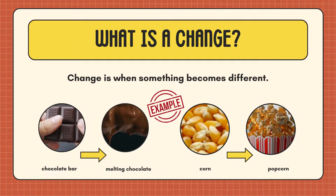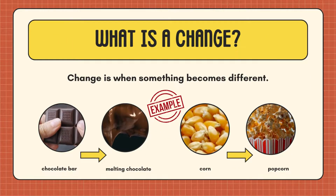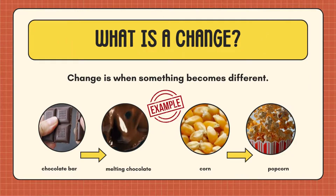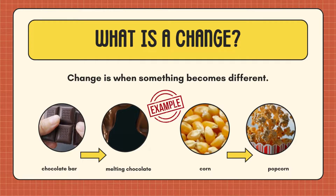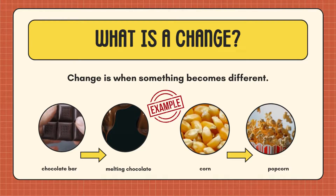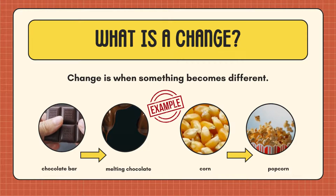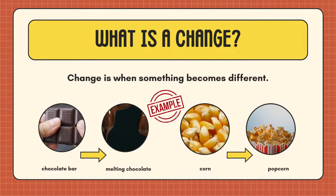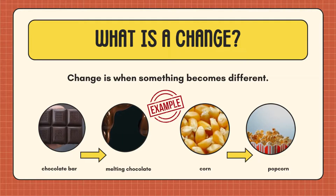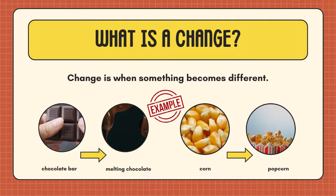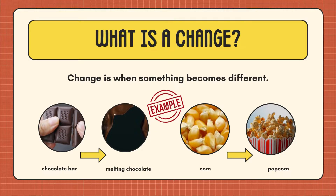What is a change? A change is when something becomes different. Here are some examples of change: a chocolate bar melting into liquid chocolate when exposed to a hot temperature, and a cup of raw corn turning into popcorn when heated.